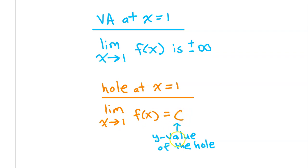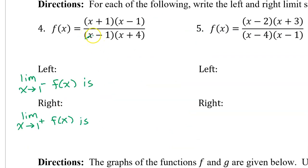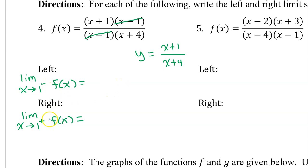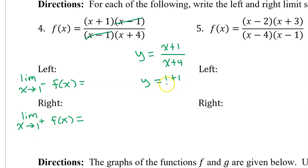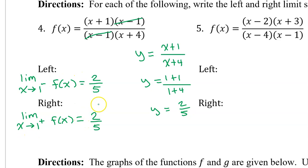Because the x minus 1 in the denominator cancels out with the x minus 1 in the numerator, we have a hole at x equals 1. Around a hole, the limit from the left and the limit from the right both equal the same constant — the y-value of the hole. We find that y-value using the related equation y equals x plus 1 over x plus 4, which is f of x after canceling x minus 1. Plugging in x equals 1 gives 1 plus 1 over 1 plus 4, which is 2 fifths. So both the left and right limits are 2 fifths.